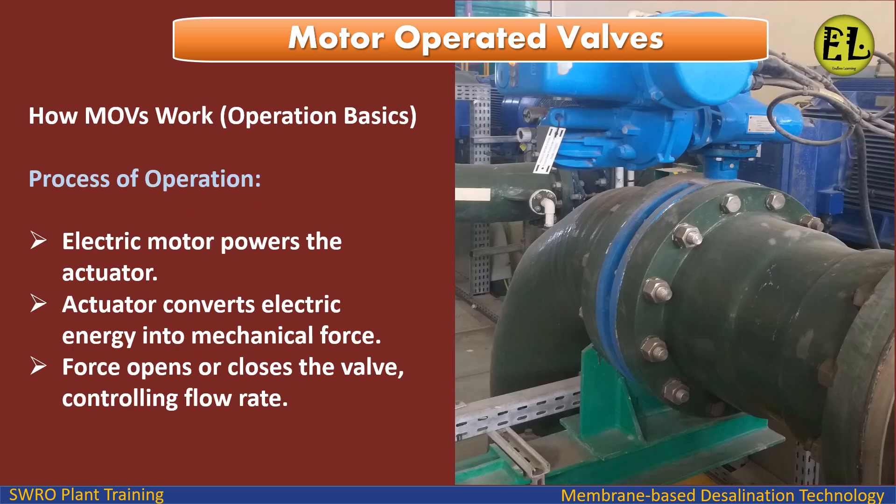Additional components include Limit Switches and Positioners, which control the valve's open/close positions. In operation, the electric motor powers the actuator, which converts electric energy into mechanical force. That force then opens or closes the valve, controlling the flow rate.